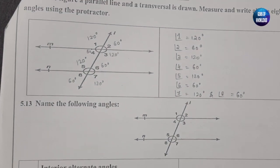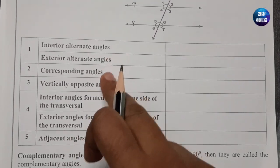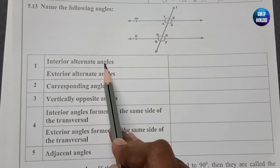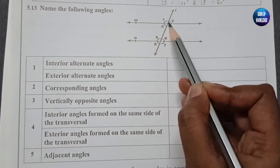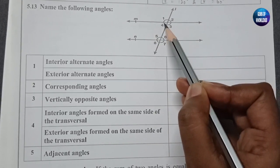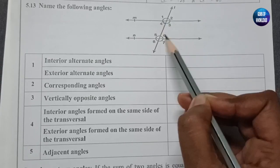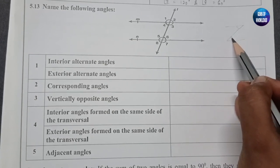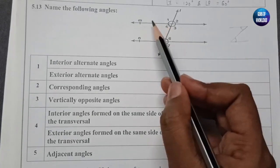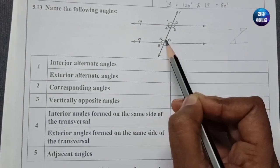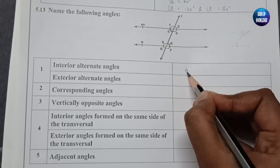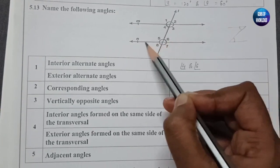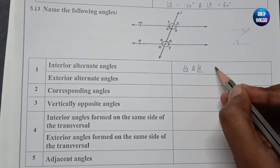Now name the following angles as given. First, interior alternate angles. Interior means the inside part; exterior means the outside part. Alternate angles form a Z-shape — for example, angle 4 and angle 6 are alternate angles because they form a Z. Similarly, angle 3 and angle 5 also form a Z in reverse, so angle 3 and angle 5 are also interior alternate angles.